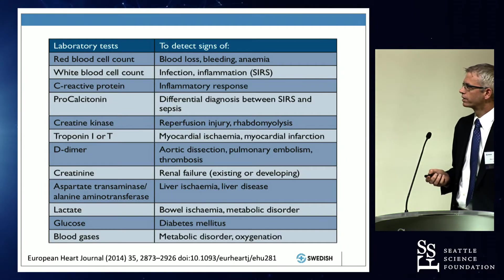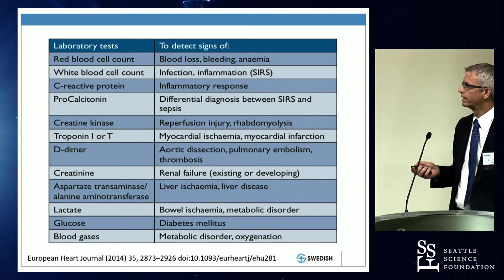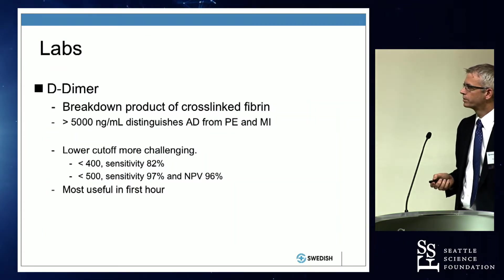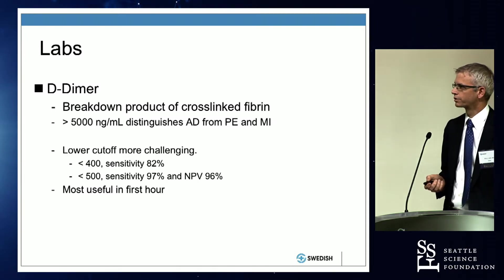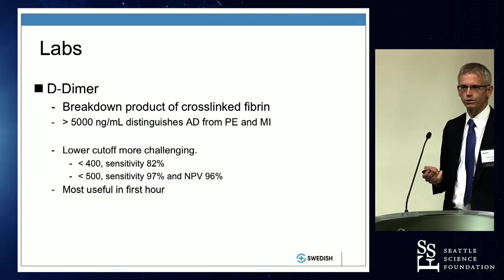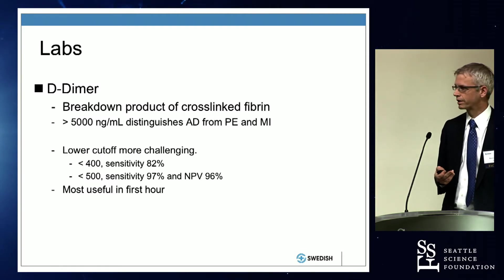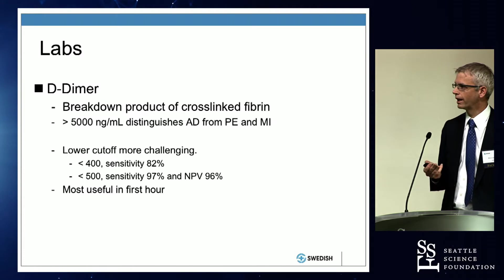Lab values are all important. CBC is good because it gives some idea of blood loss. Creatinine is important to identify renal failure. Lactate and blood gases are also important. There's some discussion of whether D-dimer is useful — it's a breakdown product of cross-linked fibrin from fibrinolysis. If it's really high, like over 5,000, that's almost certainly going to be an aortic dissection. If it's not that high, it's hard to know what to make of it. If it's zero, you could still have a dissection — it doesn't rule it out.